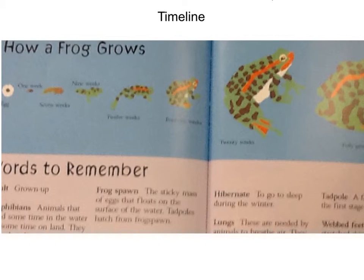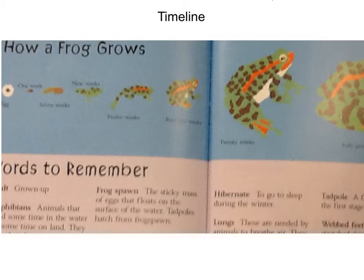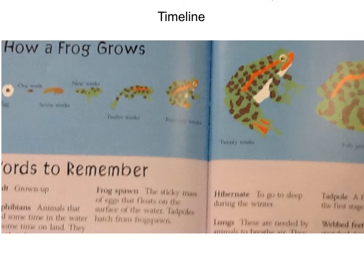This is a timeline. A timeline shows how something changes over time. For example, it could show how a frog grows — from a little egg to a tadpole and then bigger until it's fully grown. Or it could show events in time, like in 2007 there was a hurricane and by 2009 everything was fully repaired. People use timelines to discover the past or the future of something, like changes in animals or events in history.